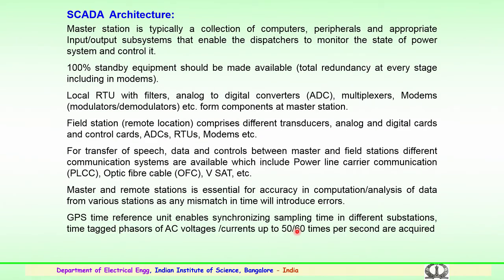The SCADA architecture basically consists of a master station — typically a collection of computers with appropriate input and output substation systems — that enables dispatchers to closely monitor the state of the power system and helps in controlling the power networks. It is 100 percent standby equipment and should be made available with total redundancy at every stage, including its modems used for communication. The local remote telemetry units with filters — analog to digital converters, multiplexers, modems, etc. — form components of the master substation for the SCADA architecture.